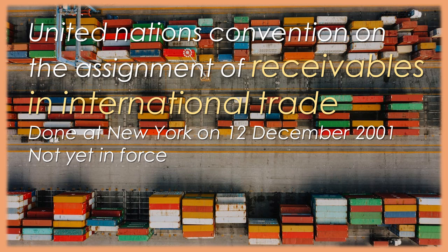Chapter 2. General Provisions. Article 5. Definitions and Rules of Interpretation. For the purposes of this convention: a. original contract means the contract between the assigner and the debtor from which the assigned receivable arises. b. Existing receivable means a receivable that arises upon or before conclusion of the contract of assignment, and future receivable means a receivable that arises after conclusion of the contract of assignment. c. Writing means any form of information that is accessible so as to be usable for subsequent reference.